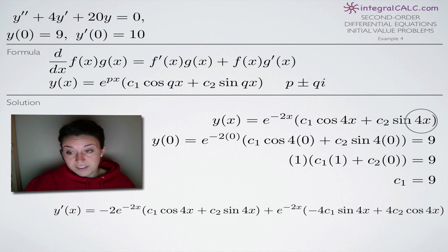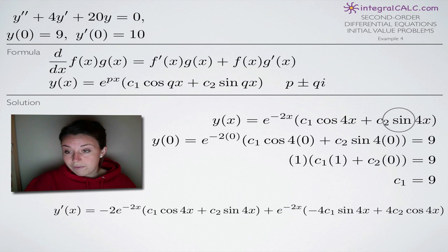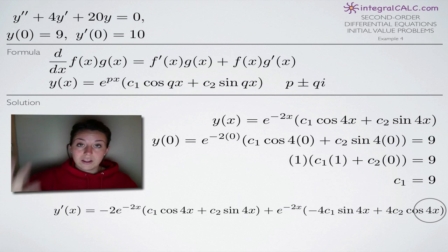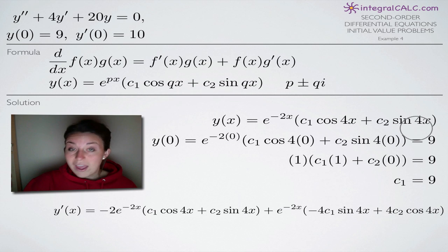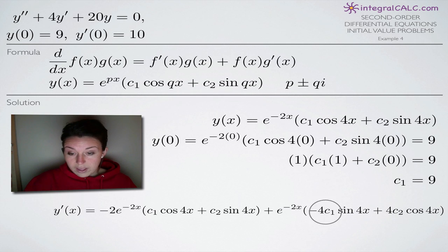For the second term, we apply chain rule to sine of 4x. Treating sine as the outside function and 4x as the inside, the derivative of sine is cosine — we leave 4x alone and multiply by the derivative of the inside, which is 4. So we multiply by 4 here, and we leave c₁ and c₂ alone as before.